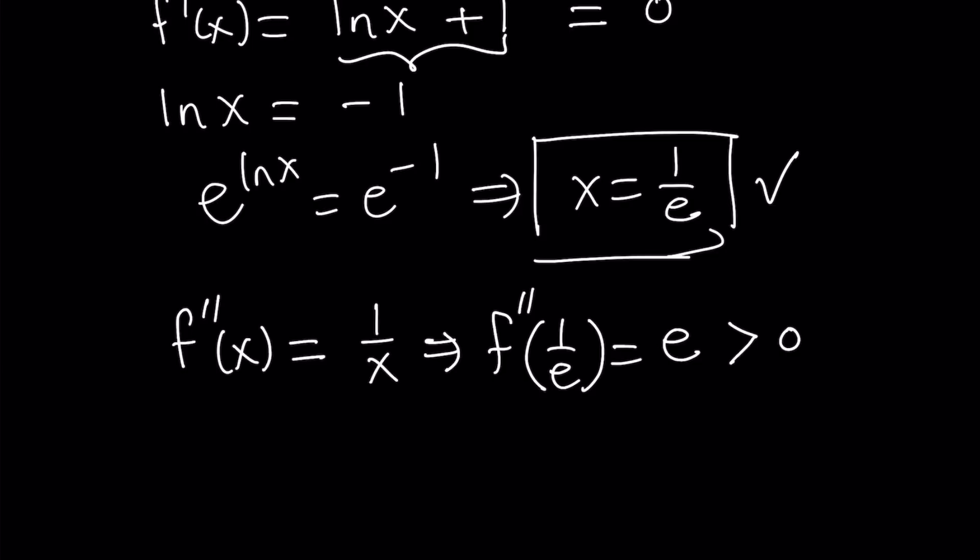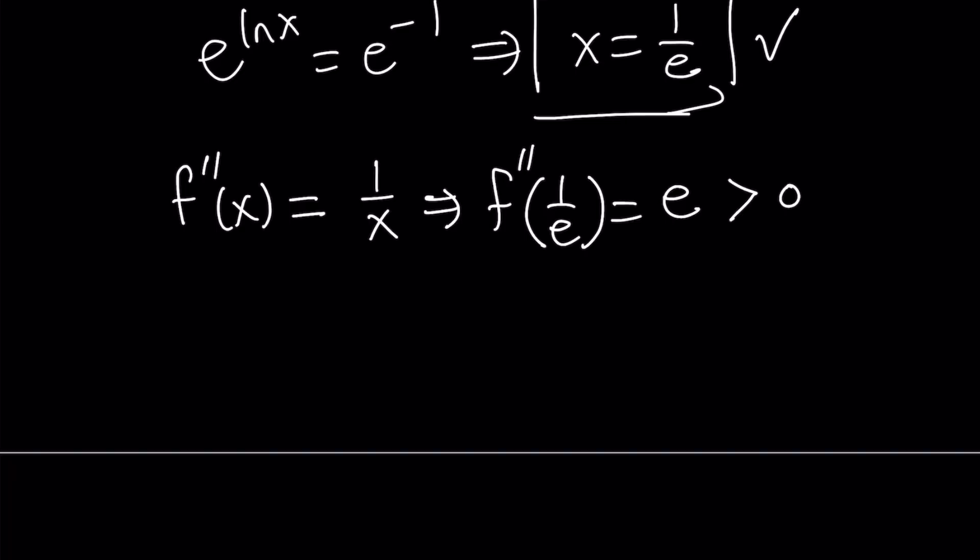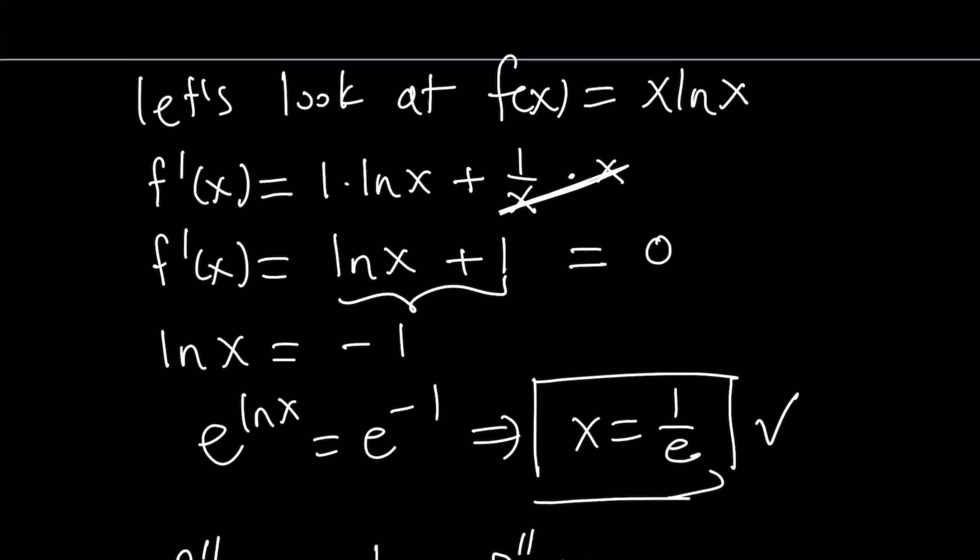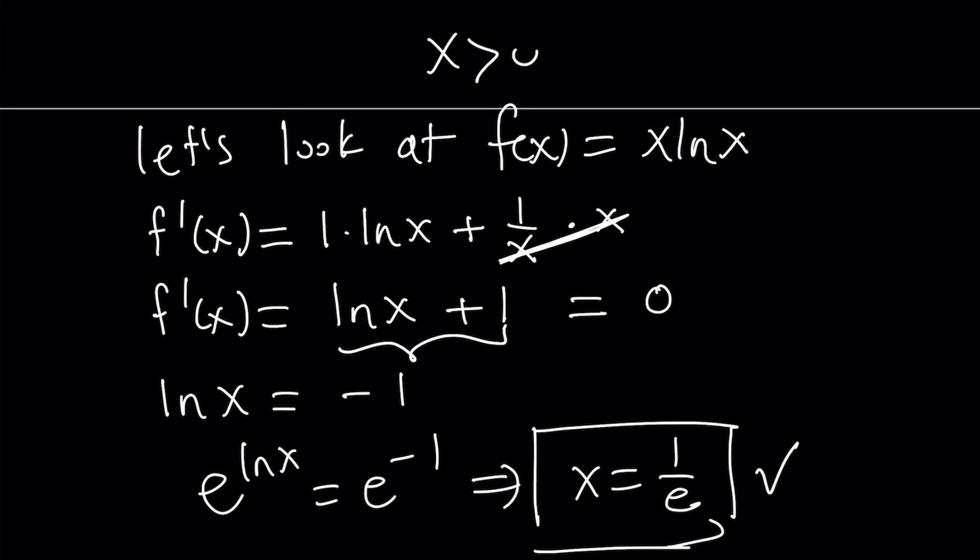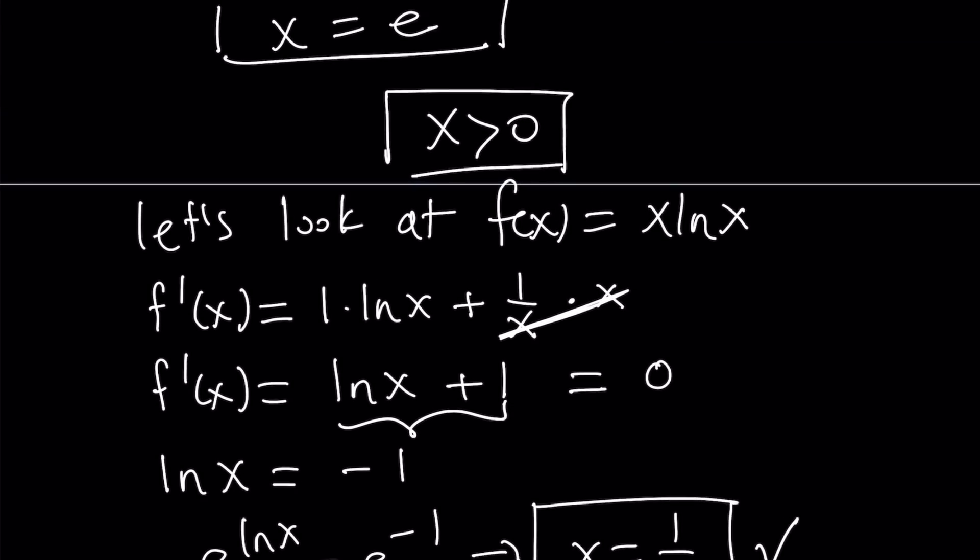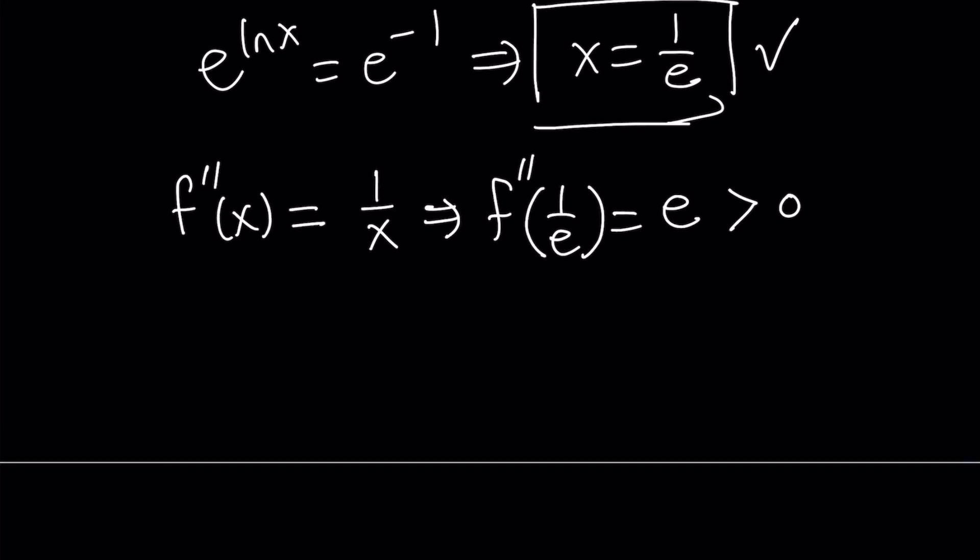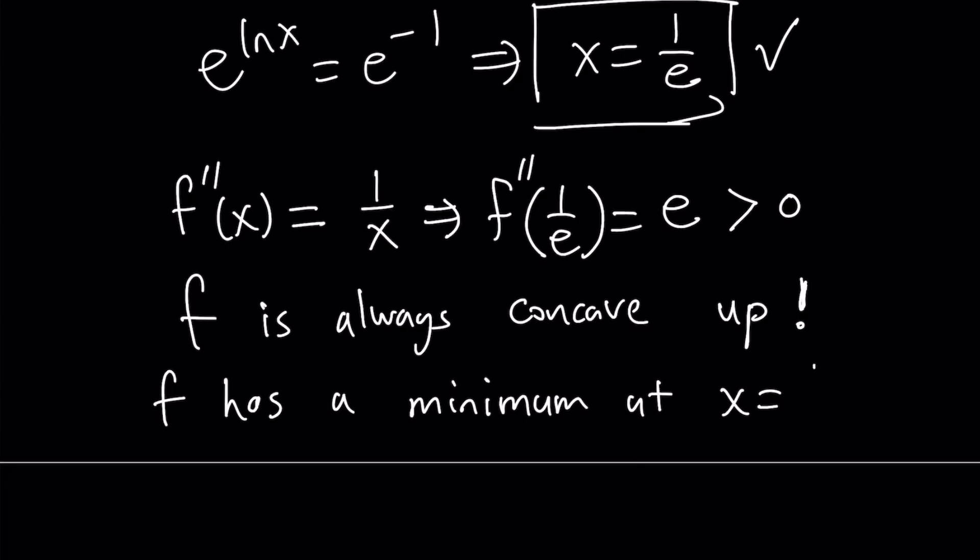Notice that the second derivative is positive at 1 over e. This tells us that f is going to be concave up in that neighborhood. So since f is going to be concave up, and it's basically always going to be concave up, because remember, our function is only defined for positive x values. Therefore, 1 over x is always going to be positive, which means our function is always concave up, which means it doesn't have an inflection point, and it has a minimum at x equals 1 over e.